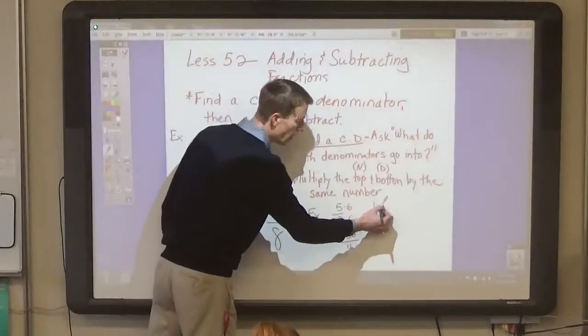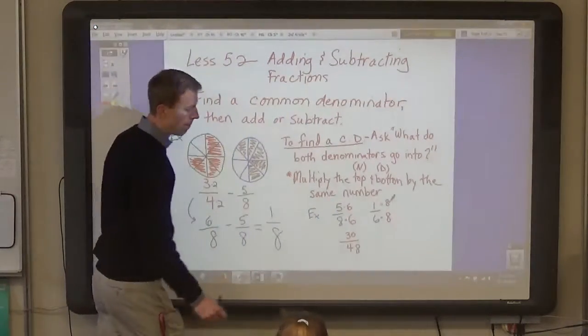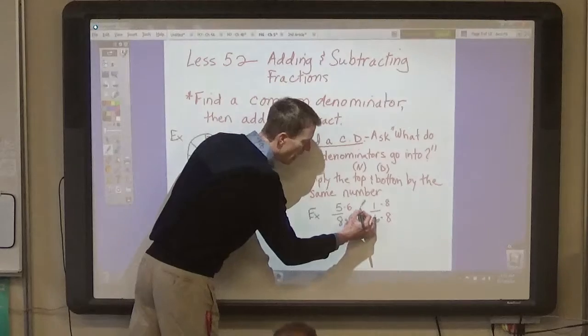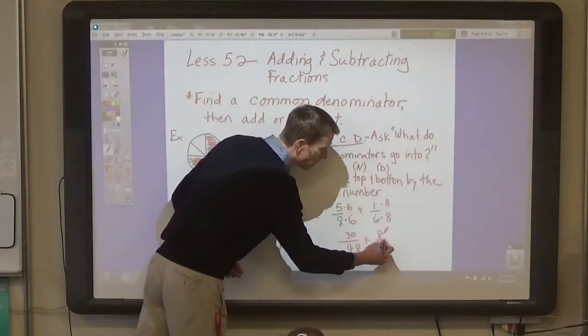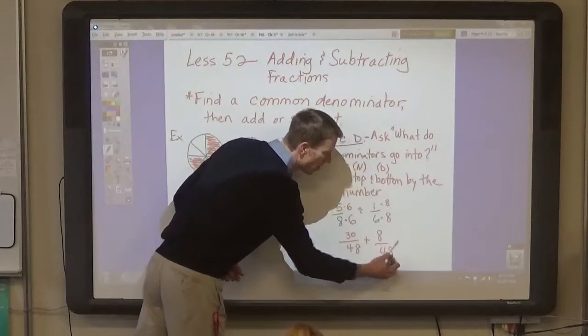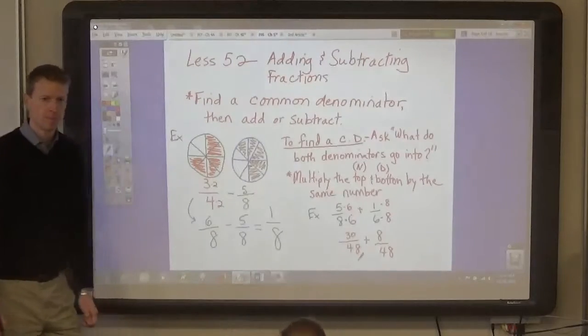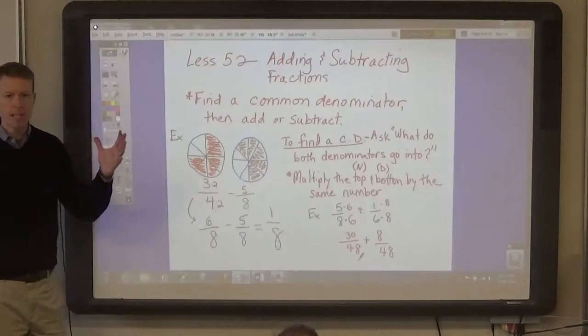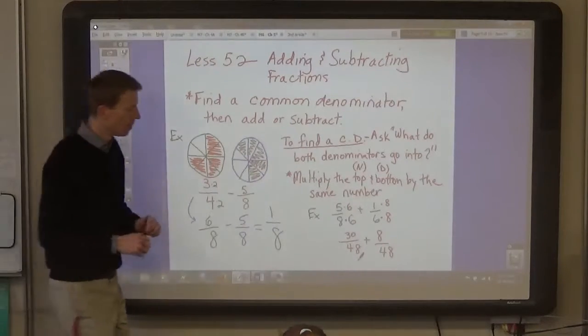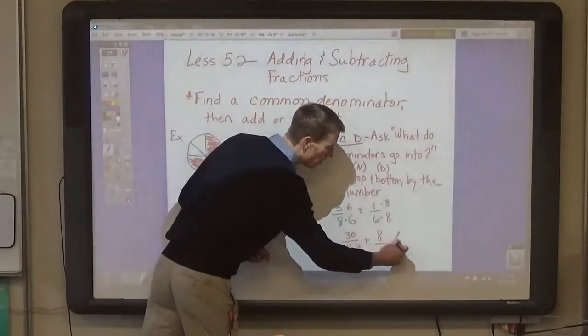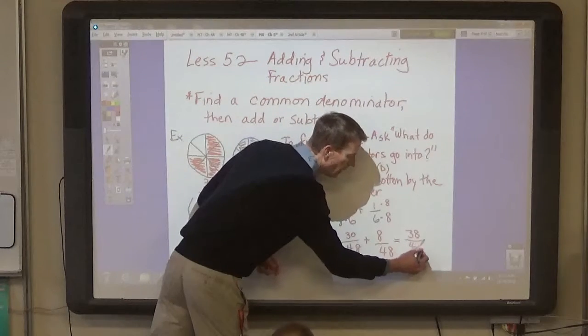And, you have to do the same with the other one, and we're adding these, by the way, and then write that equivalent fraction, 8 for the 8ths. And now, both denominators are the same, so all the pieces are the same size now, just like on your worksheet, and then you can add them, find the answer, 38, 48ths.